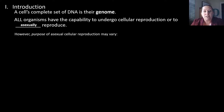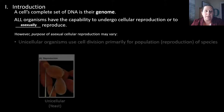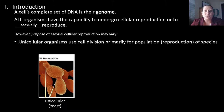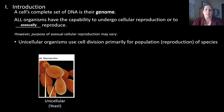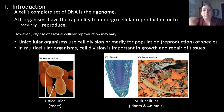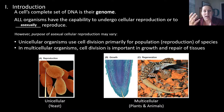The purpose of asexual cellular reproduction is going to vary depending on the organism. Unicellular organisms are going to use cell division primarily for their population to reproduce their species — to make more of themselves and build a bigger population. However, in multicellular organisms like ourselves, cell division is important for growth and also for repair when tissues get damaged.